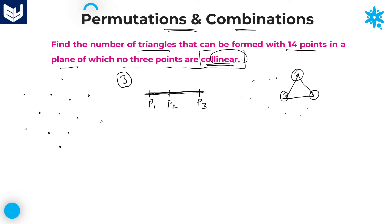According to the given condition, no 3 points are collinear, so we do not have any problem. If points are collinear, it is not possible to form even a single triangle using only those 3 points. In this problem, since no 3 points are collinear, we can directly select 3 points out of 14. Selecting 3 points out of 14 gives the number of triangles, which is equal to 14C3.